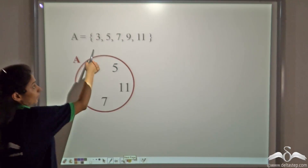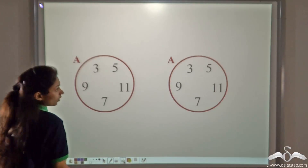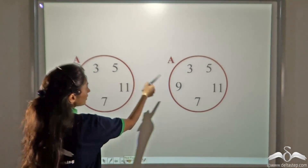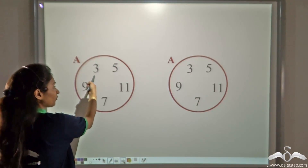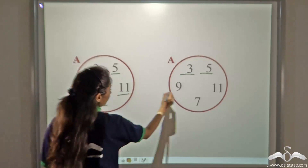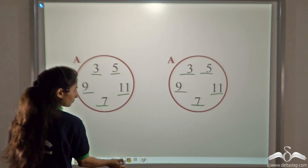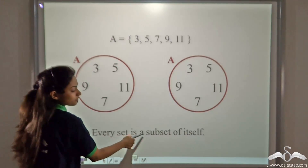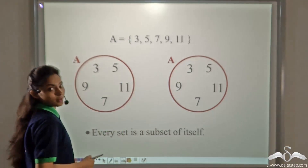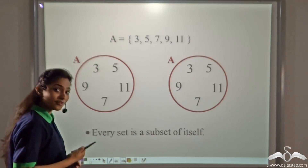Let there be set A with numbers 3, 5, 7, 9 and 11. Now compare set A with itself — every element of A is already present in A, so we can say that A is a subset of itself. Every set is a subset of itself, as every set already contains all its own elements. To summarize: the empty set is a subset of every set, and every set is a subset of itself.